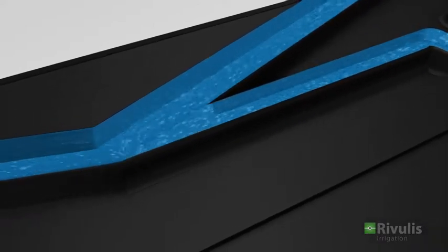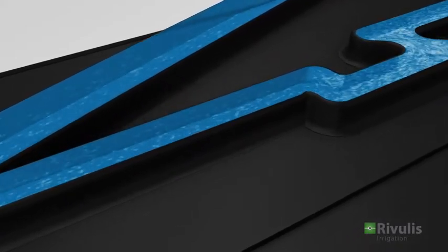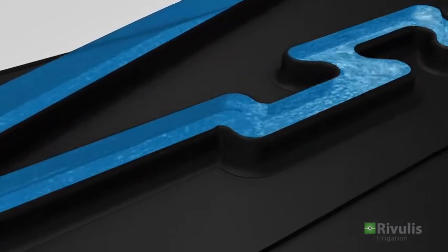The RODRIP drip tape employs two independent anti-clogging mechanisms: a vortex flow and an expanding flow channel.